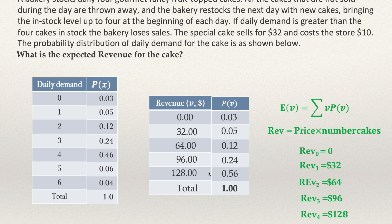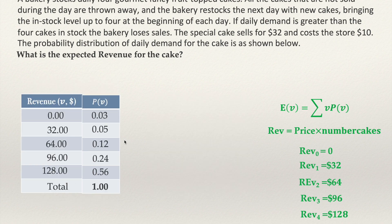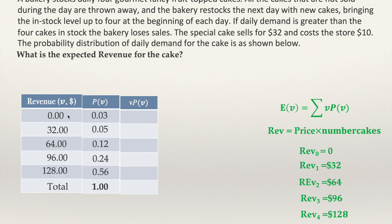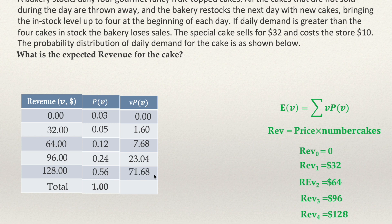From this probability distribution we can easily compute the expected revenue. We multiply each revenue value by its probability: 0 × 0.03 = $0; 32 × 0.05 = $1.60; 64 × 0.12 = $7.68; 96 × 0.24 = $23.04; and 128 × 0.56 = $71.68. Adding these five products together gives the expected value of the revenue.